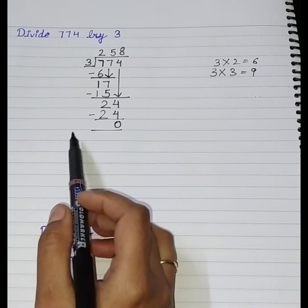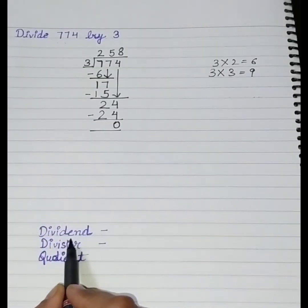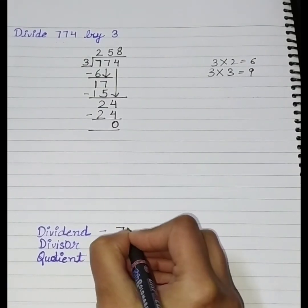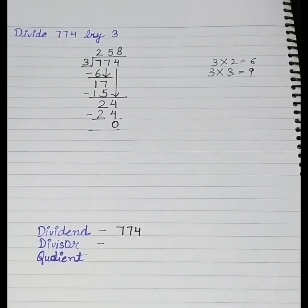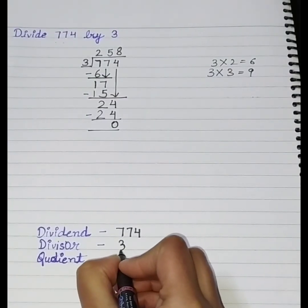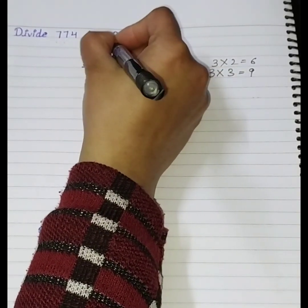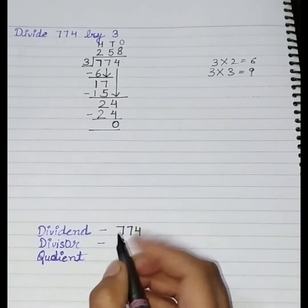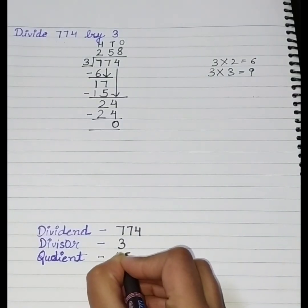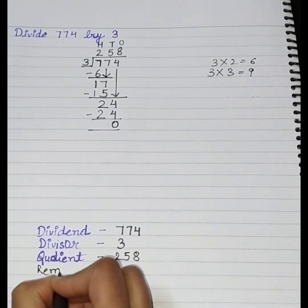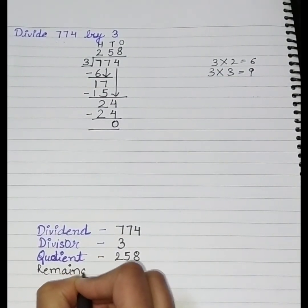So now, what is our dividend in this question? 774. The divisor we divided by is 3. Our quotient — what is our answer — is 258. This is our quotient, and our remainder is 0. The remainder is the number we are left with at the end.